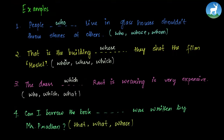'Can I borrow the book ___ was written by Mr. Pradhan?' Options: that, what, whose. Since we're talking about a book, that is a thing, we choose that because we can talk about things in an informal way. 'Can I borrow the book that was written by Mr. Pradhan?' — you're pointing at a book written by Mr. Pradhan that you need to borrow.